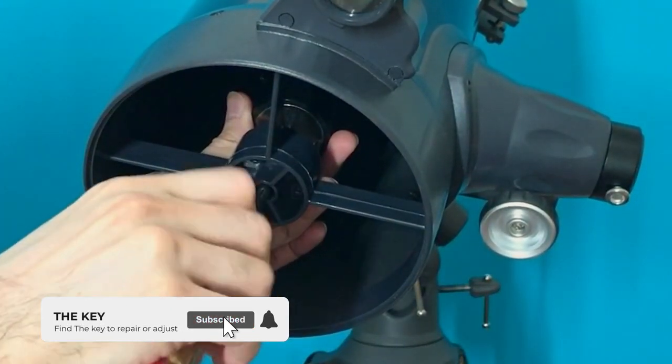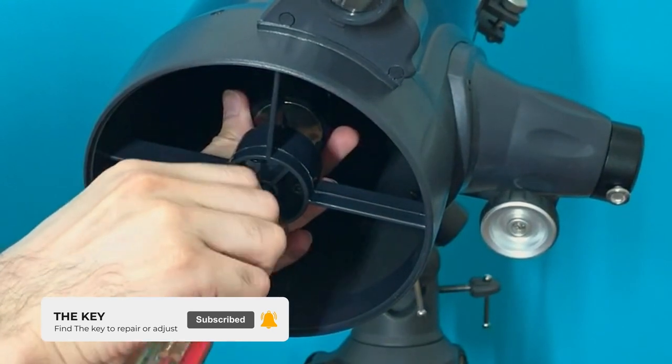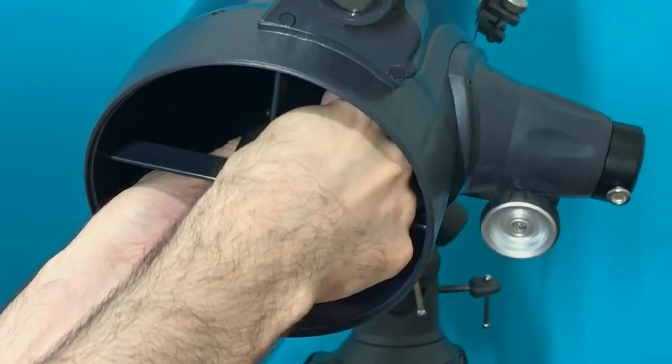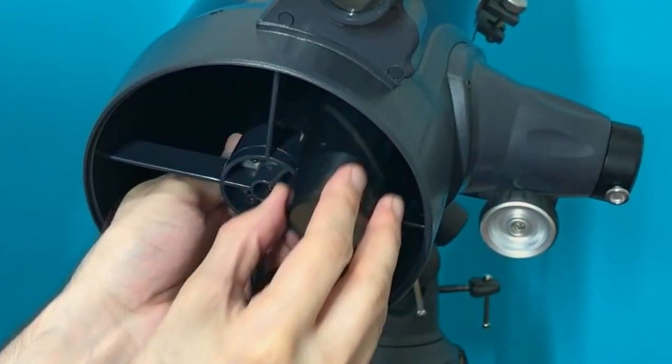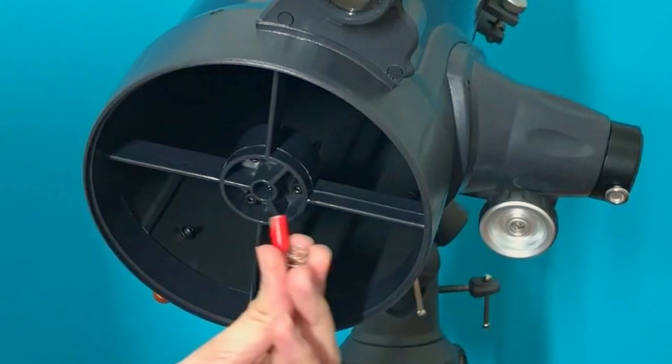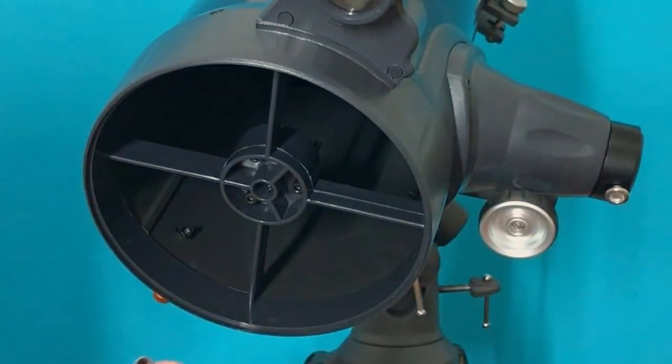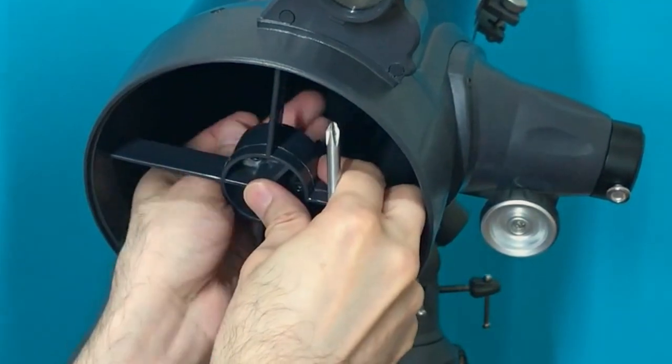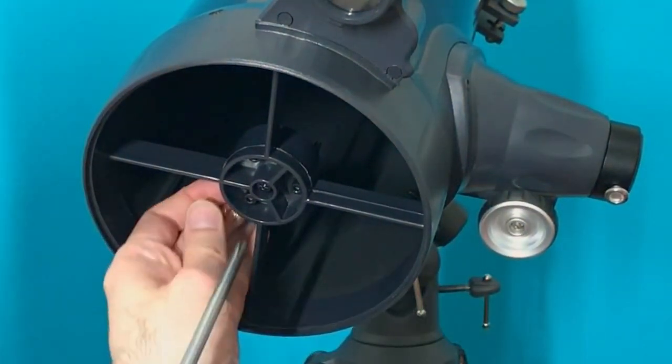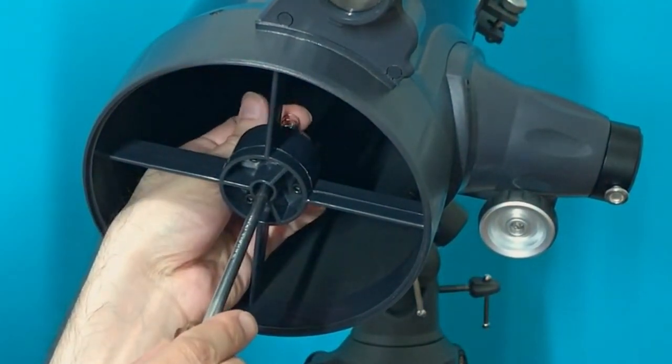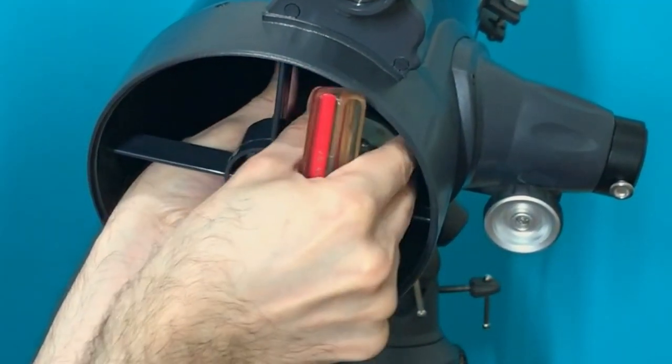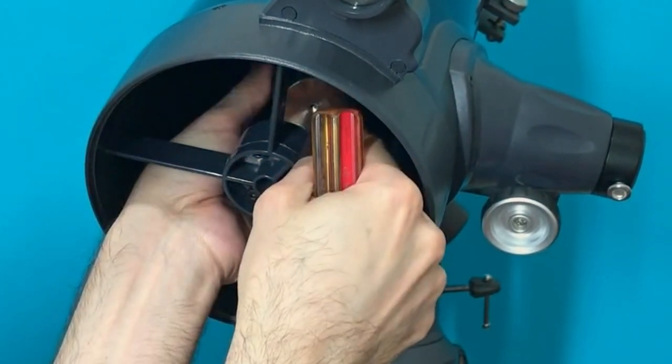To make it more stable, I want to spring-load it. I first disassemble the secondary mirror by unscrewing the central screw. My spring is not long enough, so I need to use a nut with it. I add the nut and then the spring.